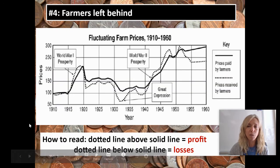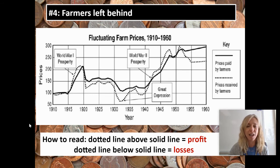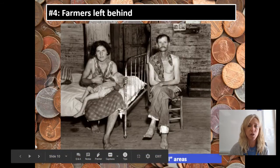But while businesses are prospering and workers are making more money, about 40% of the country is still left behind — and that is the farmers. This is obviously going to be detrimental and contribute to the Great Depression. Farmers suffered because of falling crop prices. During World War I there was increased demand, but after the war that demand dropped, prices fell, and farmers lost money — plus they had expensive machinery debt.